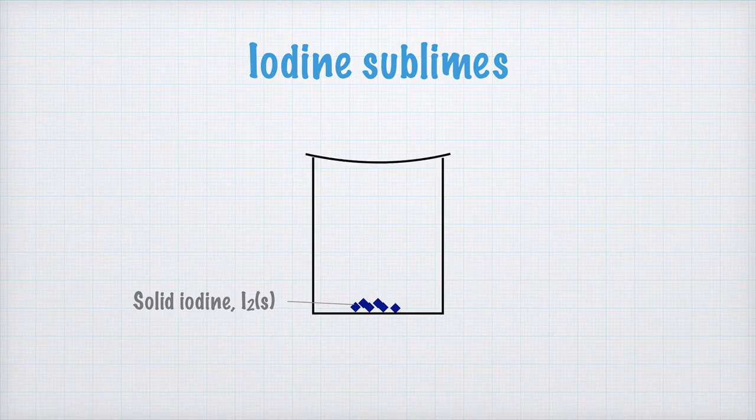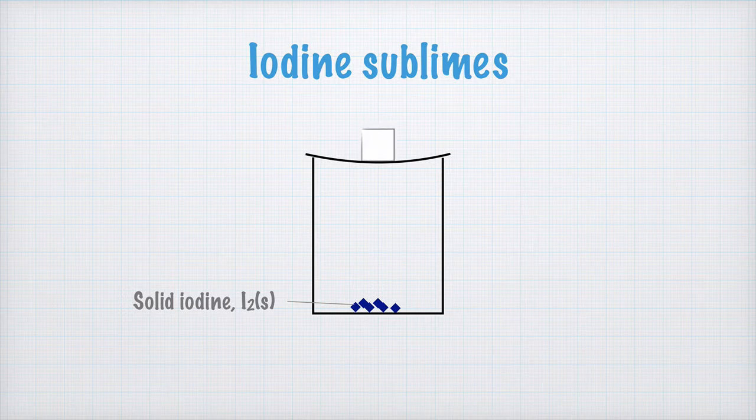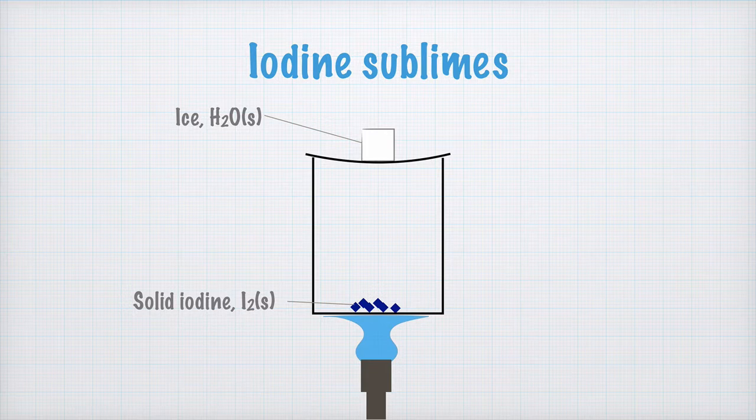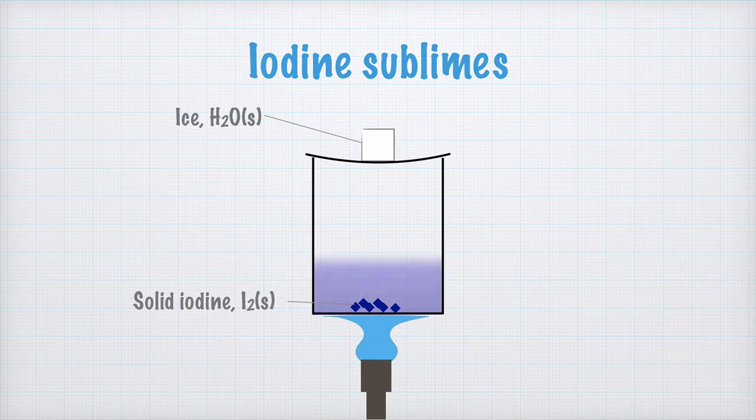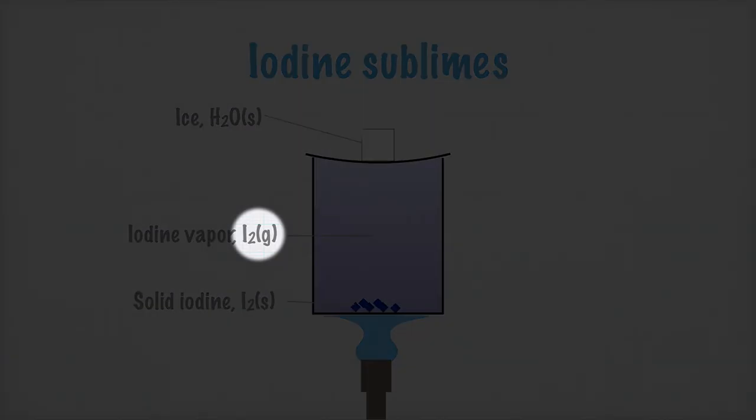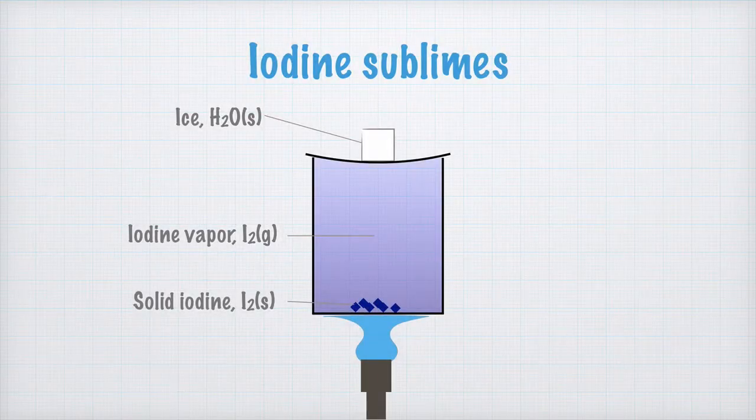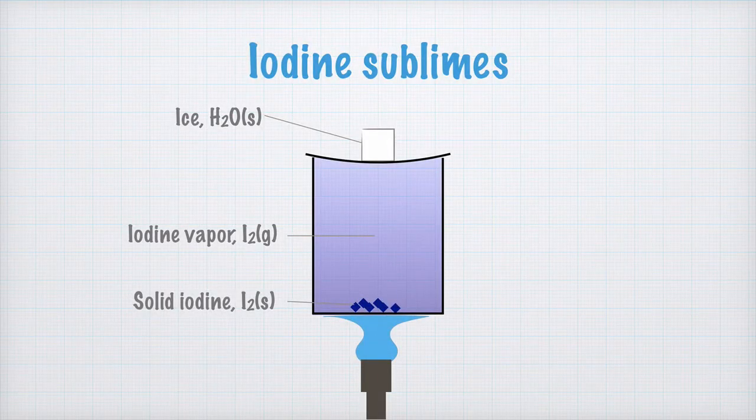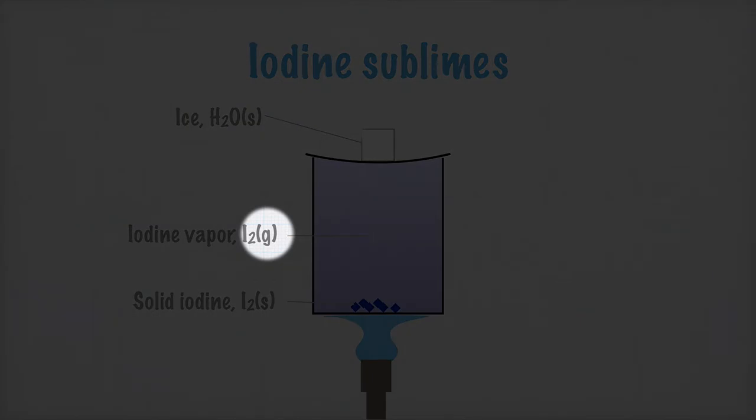On the top of the beaker, we put a watch glass, and some ice to keep it cold. When we heat things up, this is supposed to be a Bunsen burner down here, the iodine sublimes. It changes from solid to gas without passing liquid. Purple iodine vapors fill the entire beaker. The iodine vapor is written I2G. It still consists of iodine molecules, I2, but right now they are in their gaseous form, so we add a G between parentheses like this.